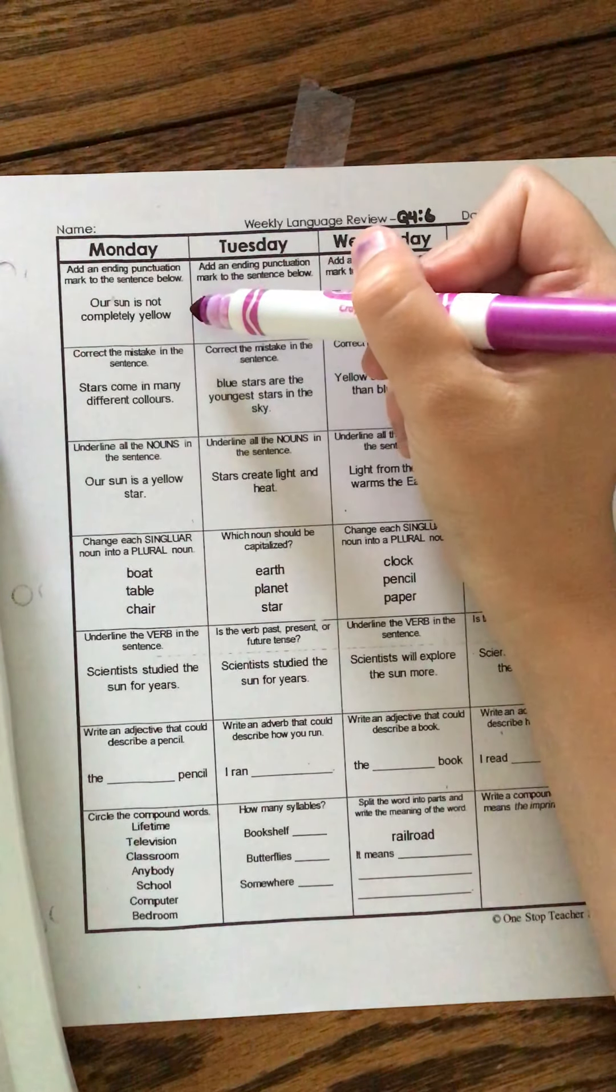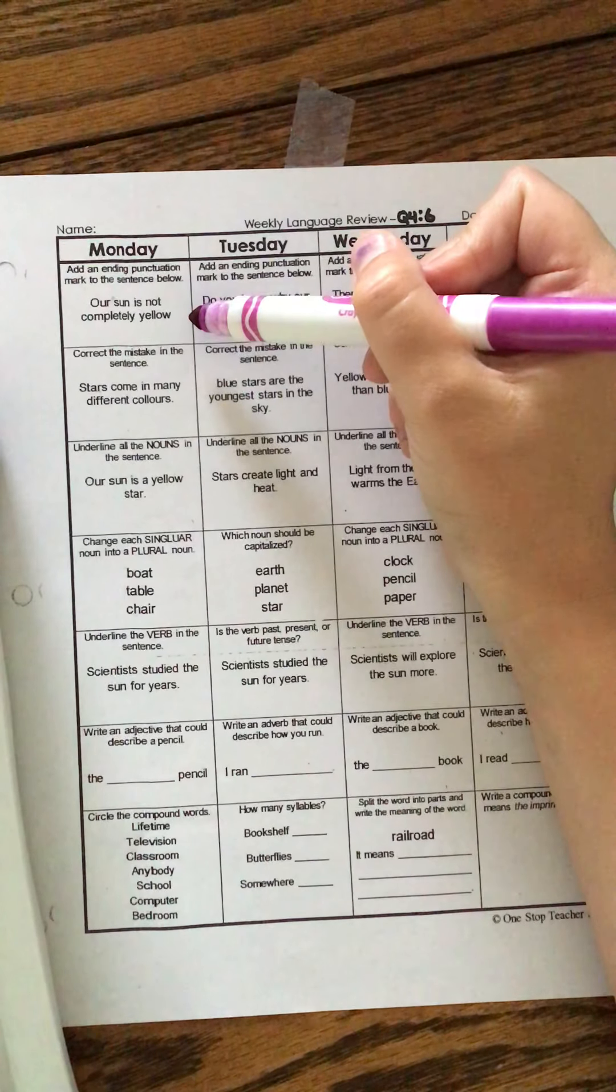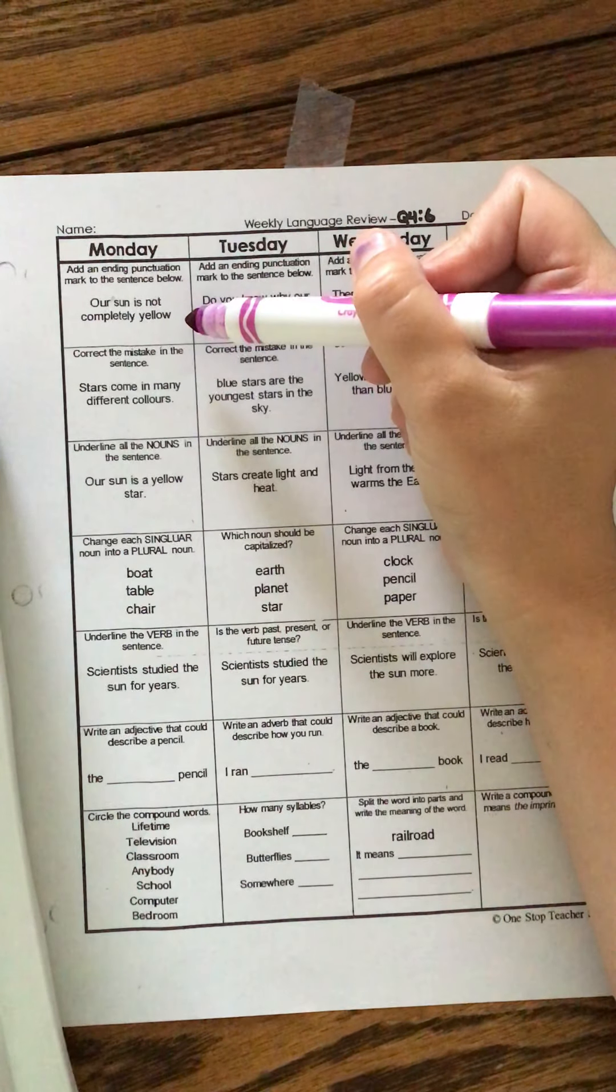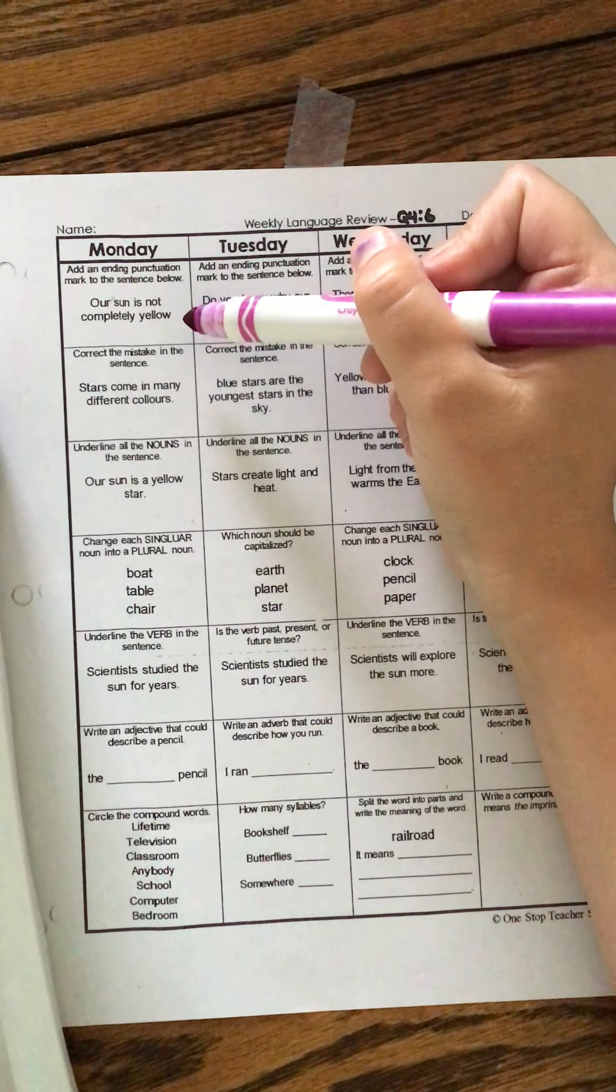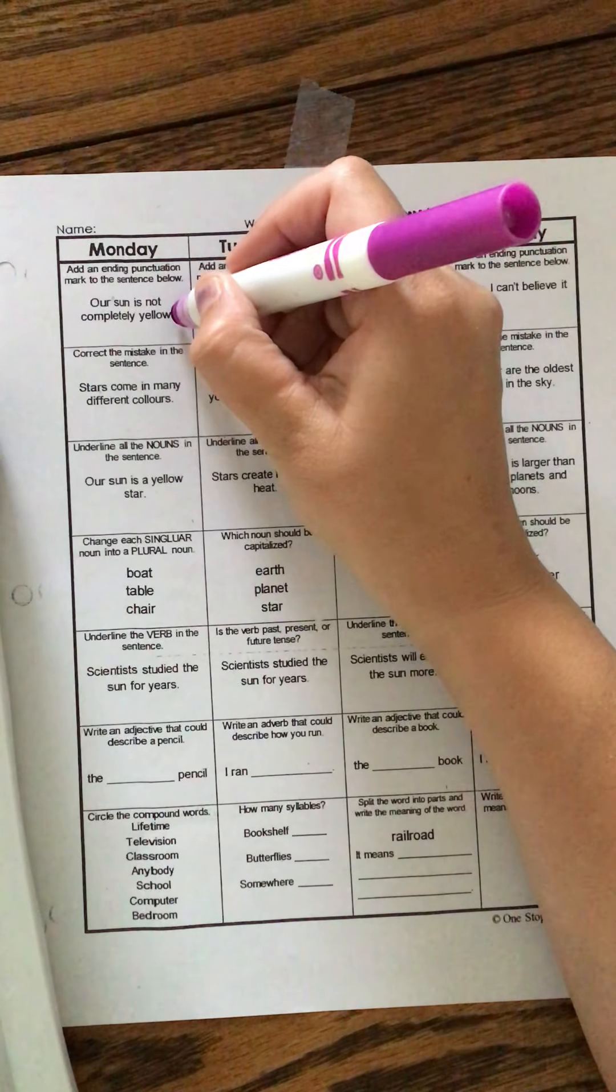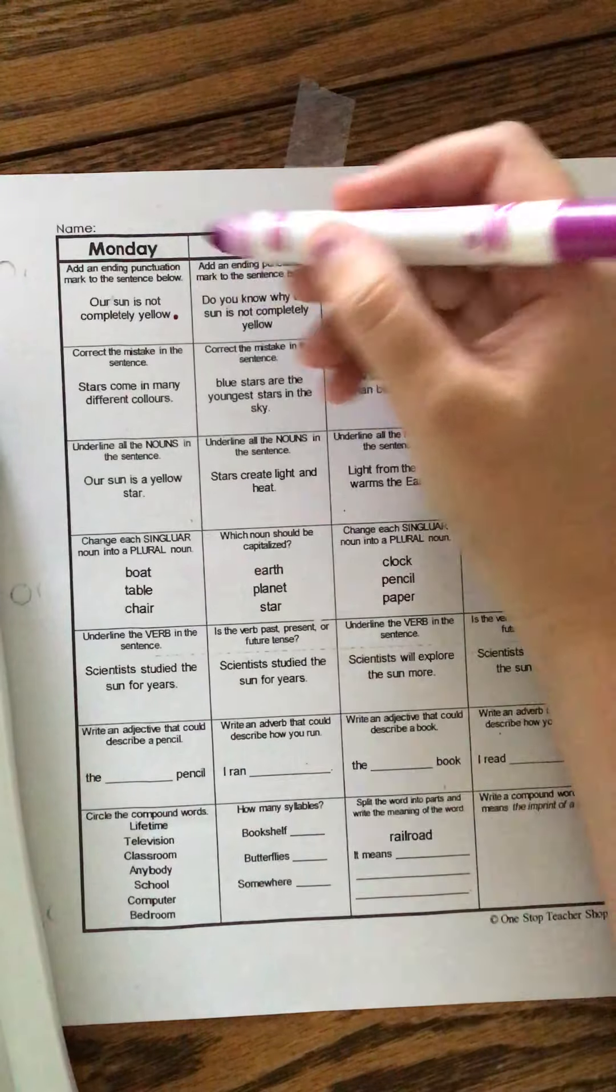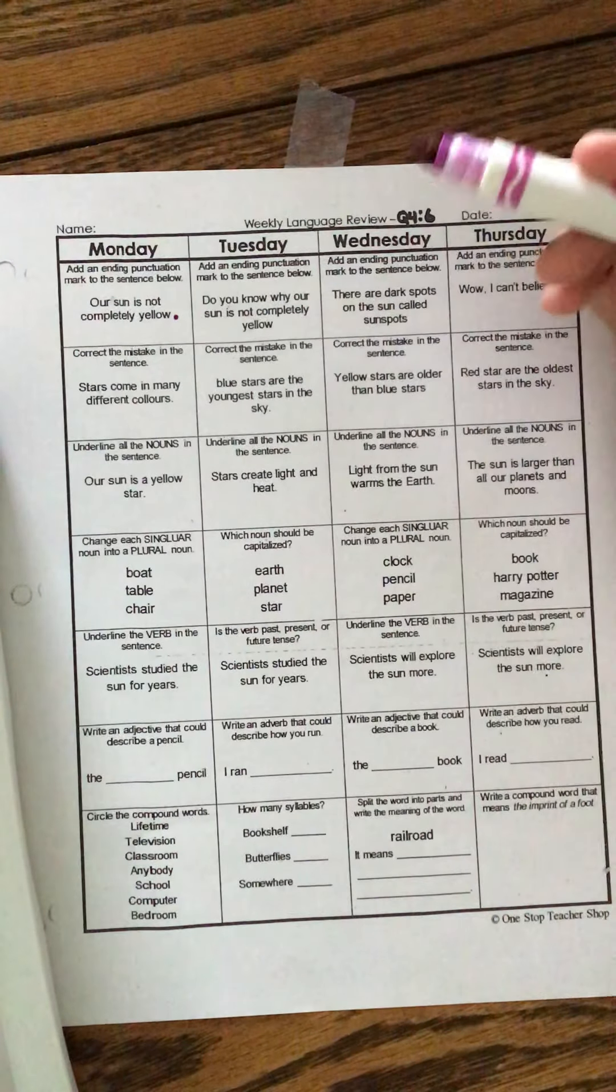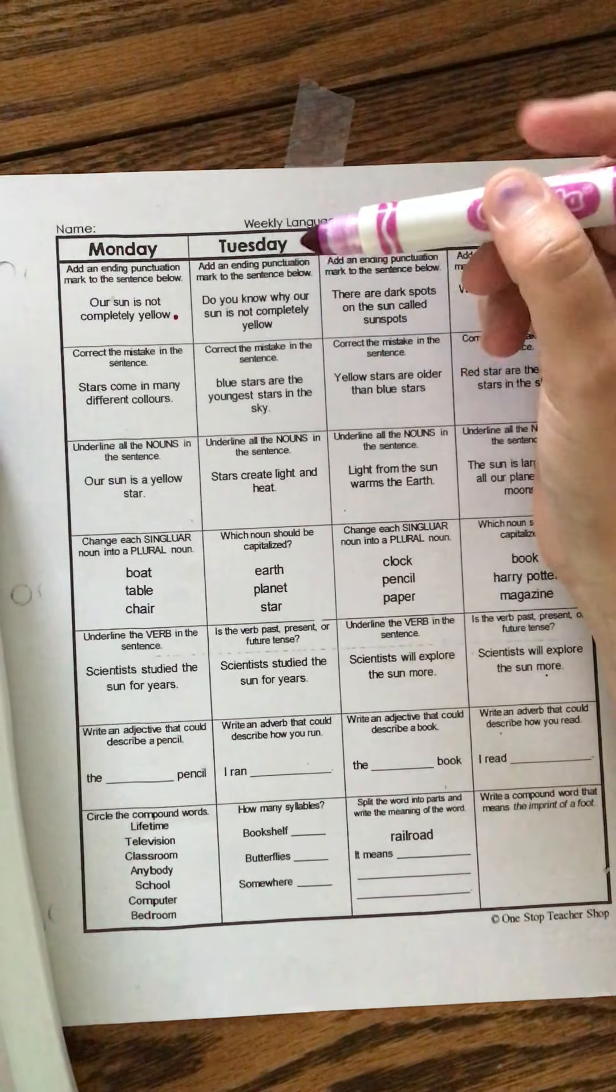Add an ending punctuation mark to the sentence below. Our sun is not completely yellow. Do they ask us a question? No, it was more of a statement. So, we're gonna do a period. If there was a lot of excitement or feeling emotion, then we would have done an exclamation mark, but it was just kind of a boring old, our sun is not completely yellow.